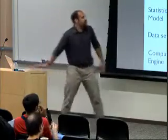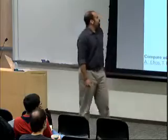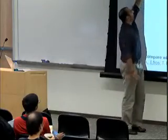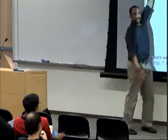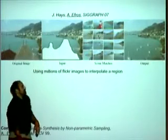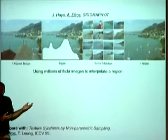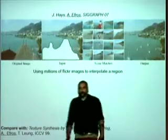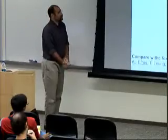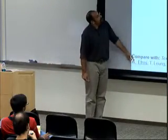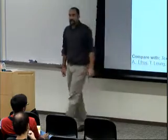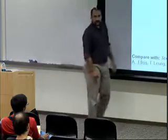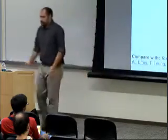I'll give you examples of this trend. Here's one from Alyosha Efros: you give it an image, say you don't like these houses being here, so you blot them out and want to fill in the blotted-out part with something plausible. These days Alyosha takes a very data-heavy approach — he just crawls through millions of images on Flickr, finds little patches, and substitutes them in. Contrast that with something he did ten years ago that involved a pretty sophisticated HMM-based model — not very data-driven but much more complicated. The newer approach works a lot better.